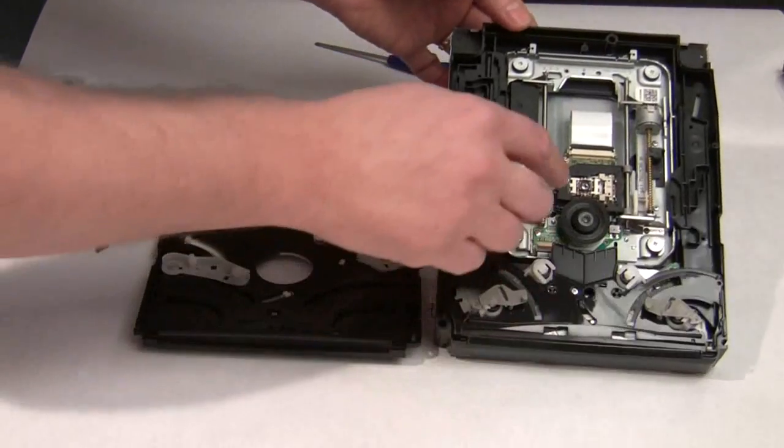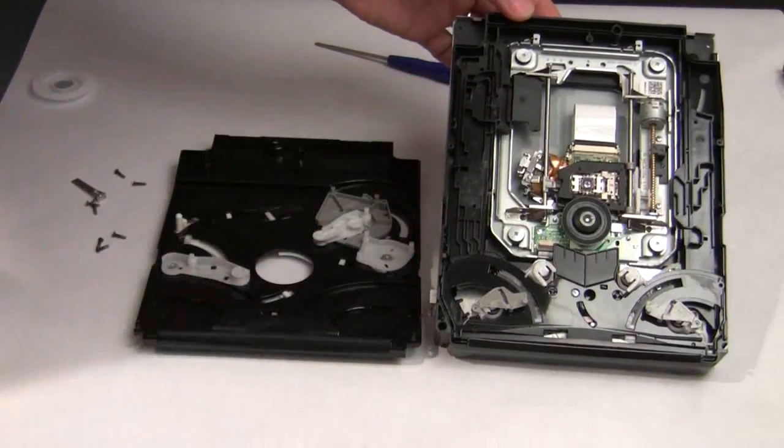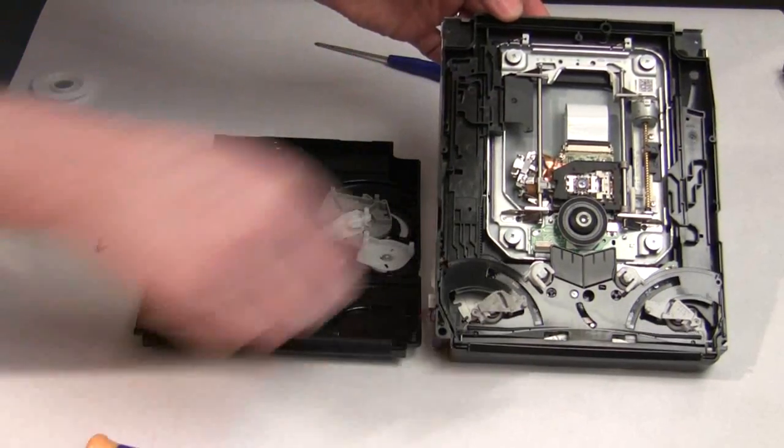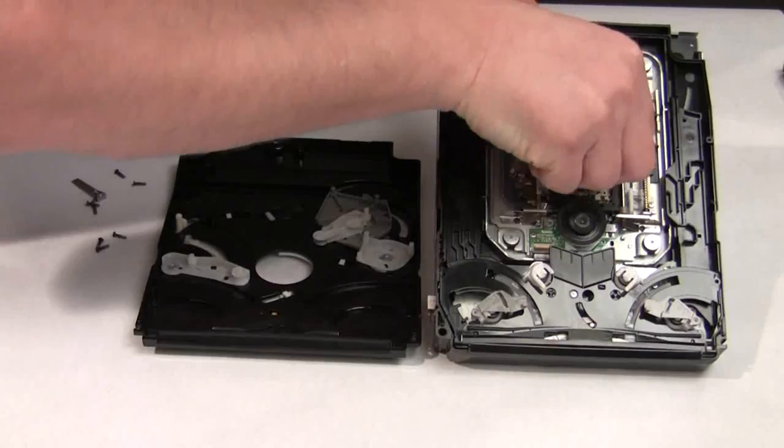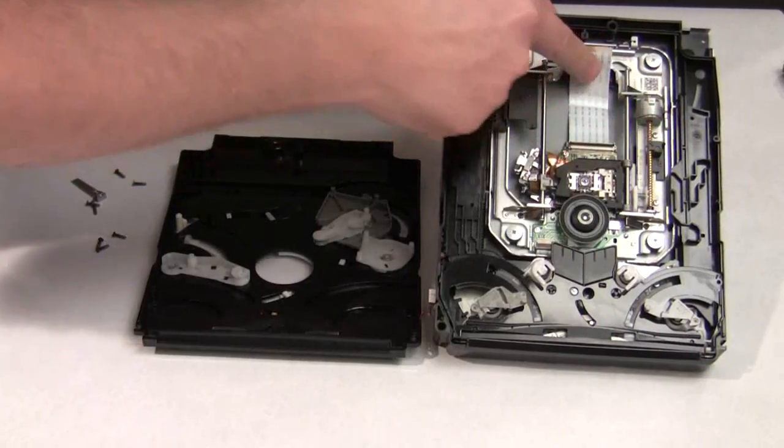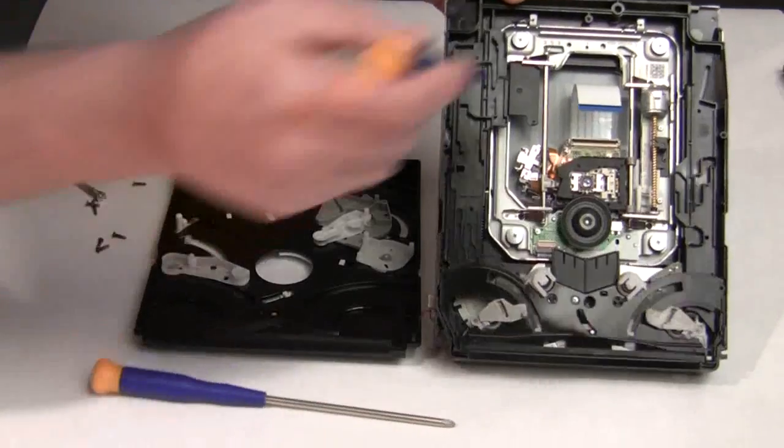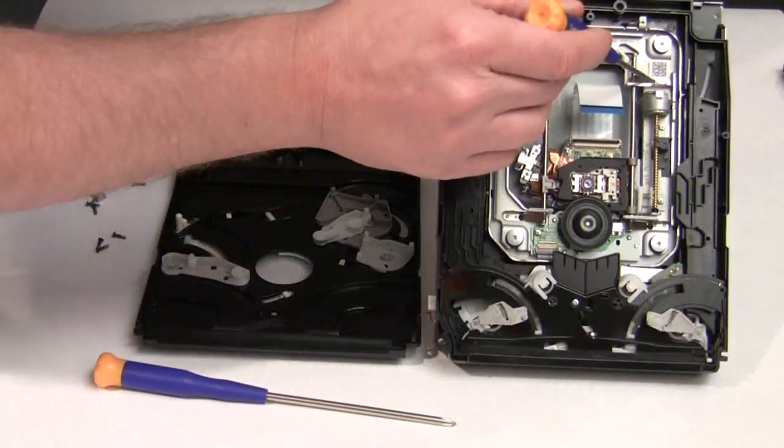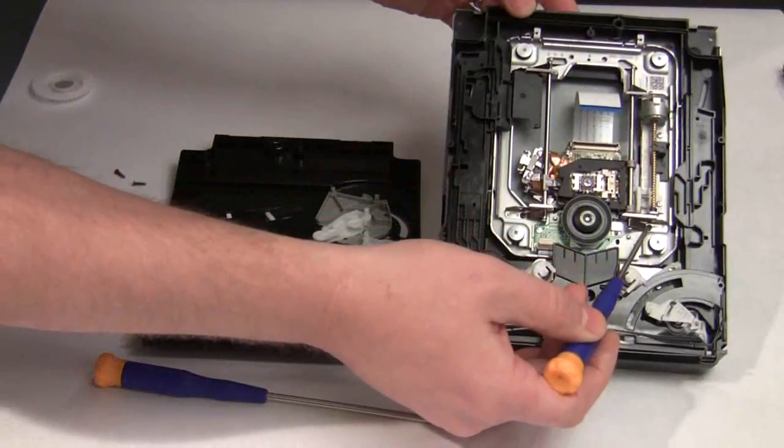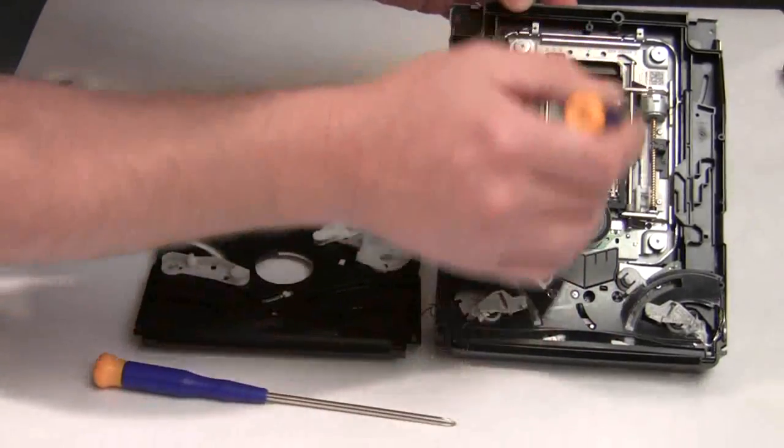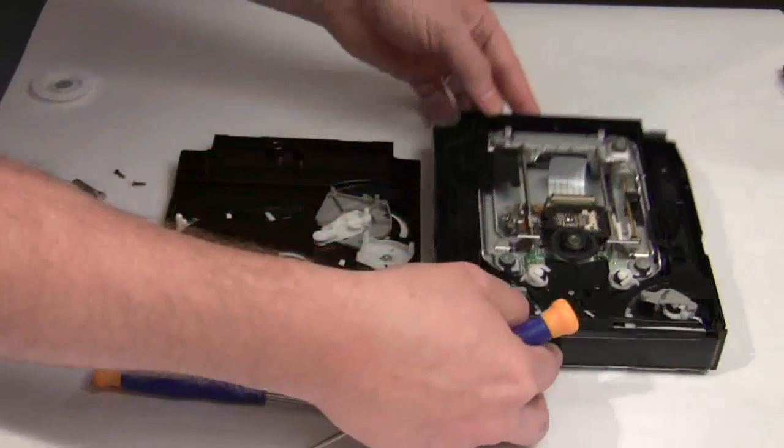This is your laser, right there. All we're going to do is we're going to unclip the ribbon cable here. Pull your ribbon out. And then there is going to be a screw here and a screw down here, holding these little clips on that holds this bar across. All you've got to do is take those two screws out and the laser will pull right out.